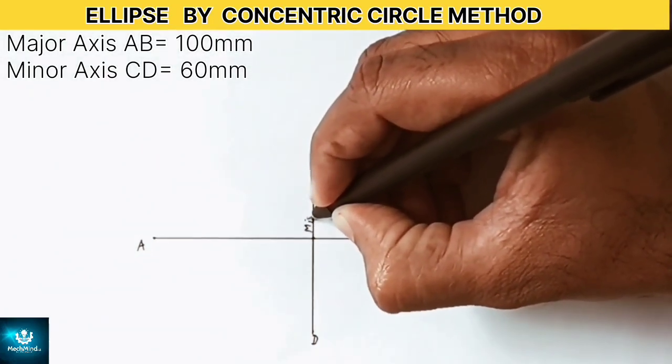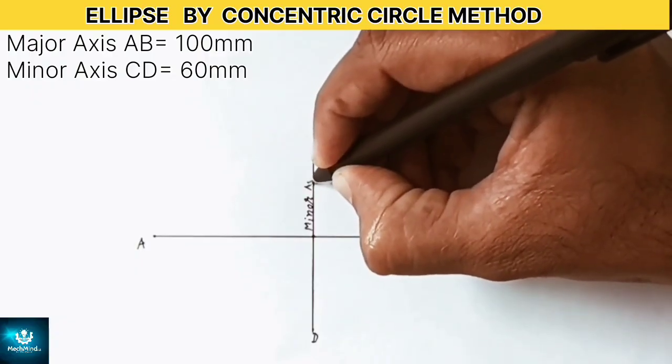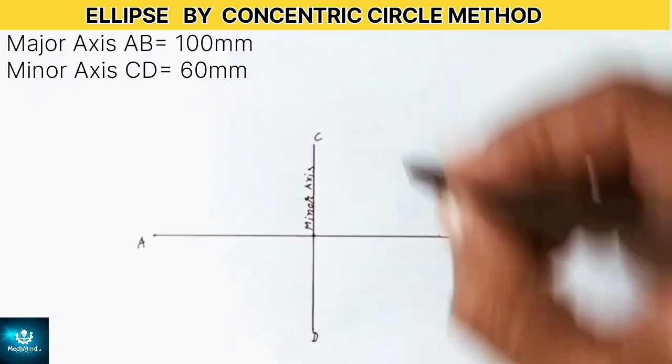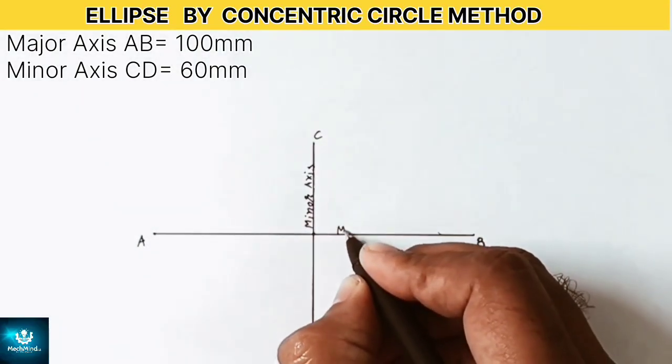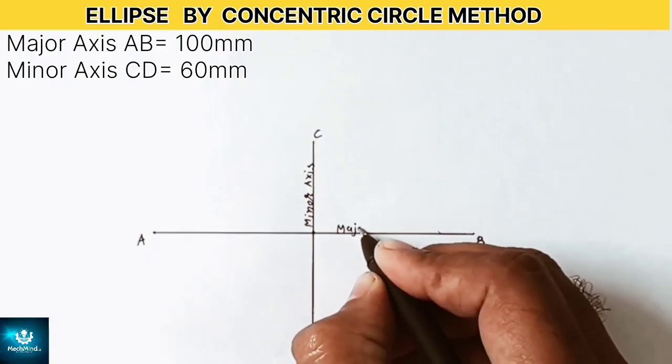Mark the vertical as minor axis and horizontal line as major axis.